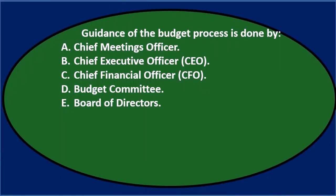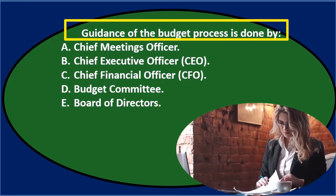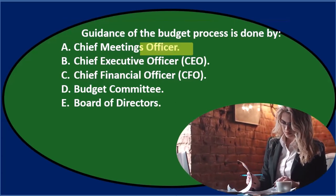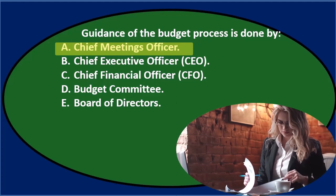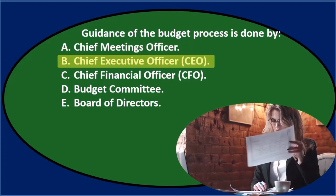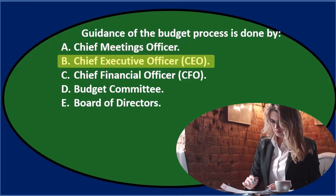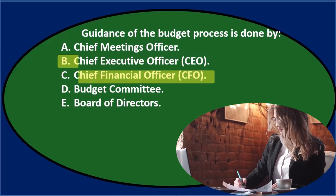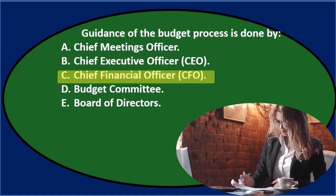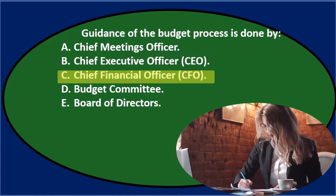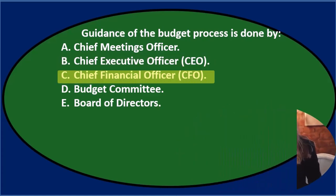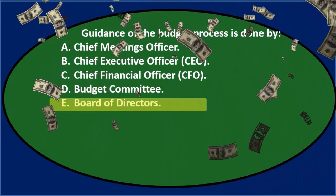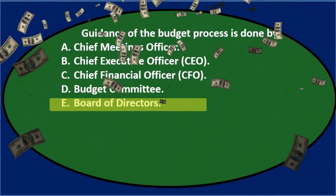First question: guidance of the budget process is done by — A. Chief Meeting Officer, B. Chief Executive Officer, otherwise known as the CEO, C. Chief Financial Officer, otherwise known as the CFO, D. Budget Committee, or E. Board of Directors.